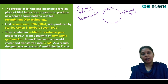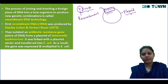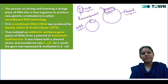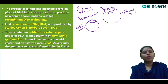In recombinant DNA technology, I remove the unwanted gene from this plasmid. Once that unwanted gene is removed, the plasmid opens up and I insert my desired gene — for example, the ab1 gene, which is responsible for pest resistance in microbes. That desired gene is what we work with.